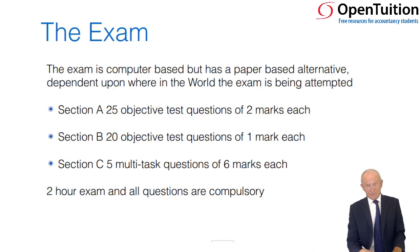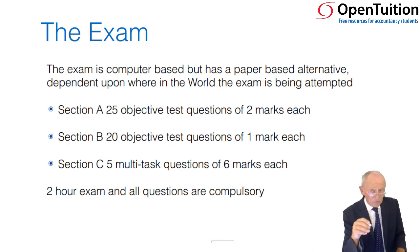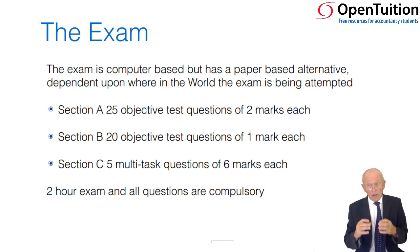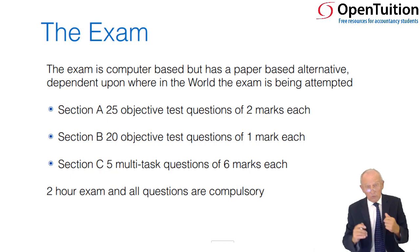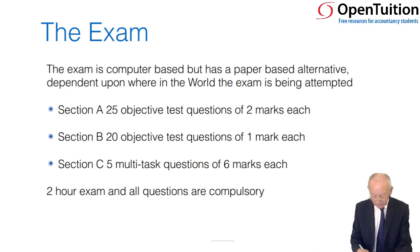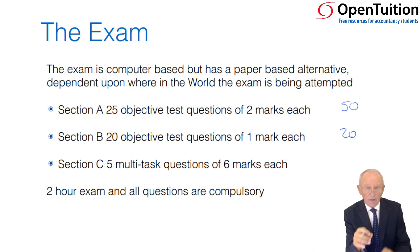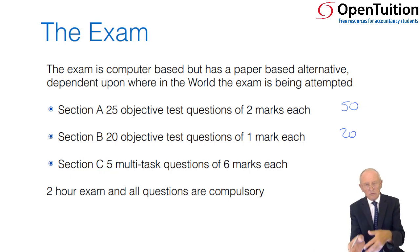Moving on to the exam itself. It's computer-based, but there is also a paper alternative because a computer-based centre may not always be near you. The two are, as near as can be, identical. There are 25 objective test questions at two marks each — that's 50 marks — and 20 objective test questions at one mark each — that's 20 marks. Section C is the only area where there is a minor difference between computer-based and paper-based.